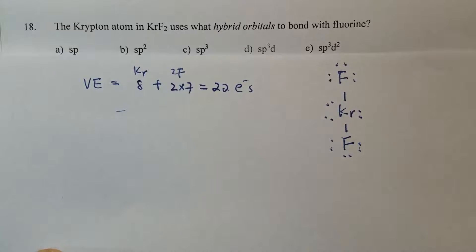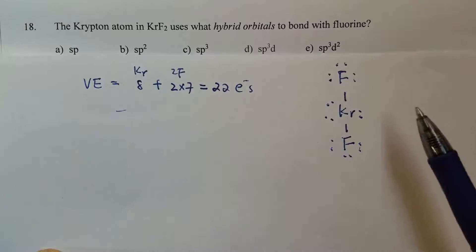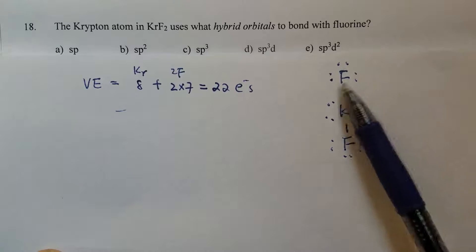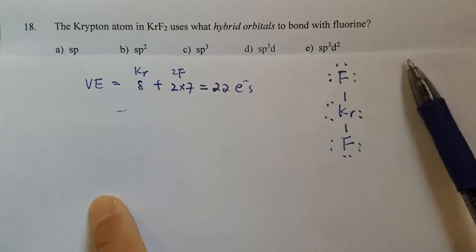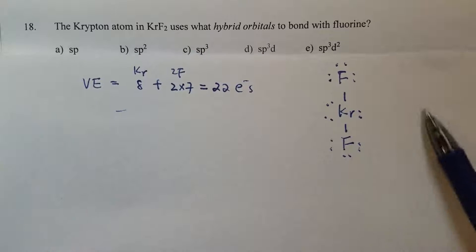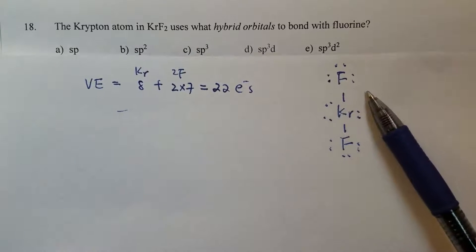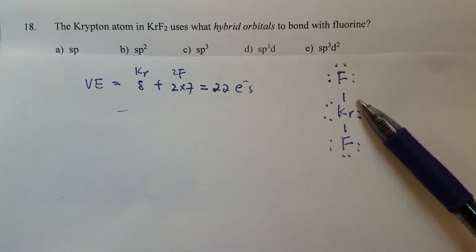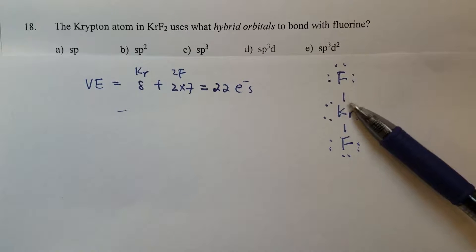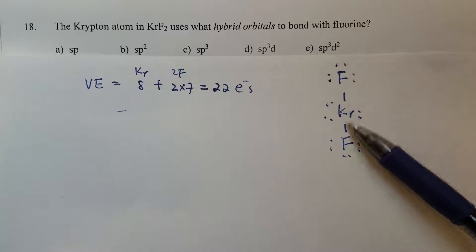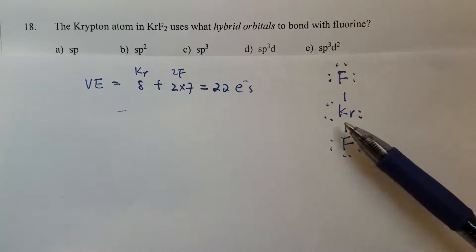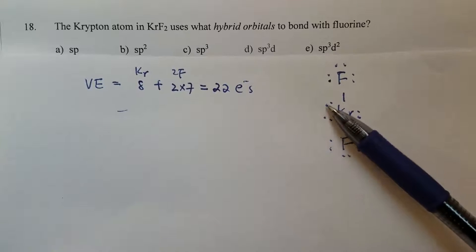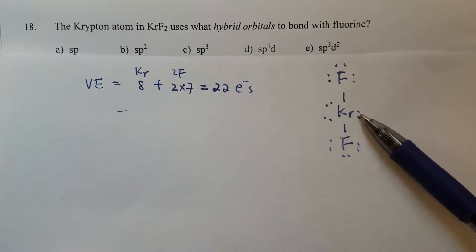Now for the central atom, let's count the number of electron groups. There are two bonding groups and then three lone pairs, for a total of five electron groups.